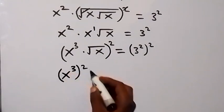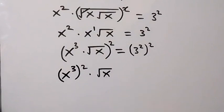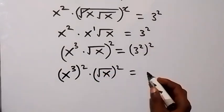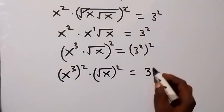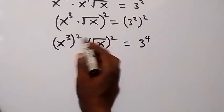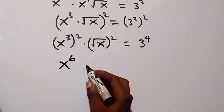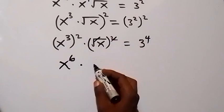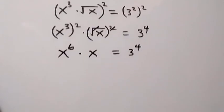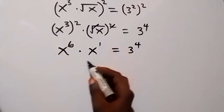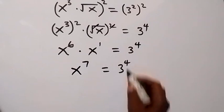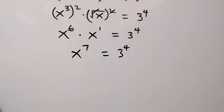So we have x raised to power three squared, then square root of x squared as well. This gives us 3 raised to power 4. This power multiplication gives us x raised to power six, then times the square cancels the square root and this is simply x, which equals 3 raised to power 4.